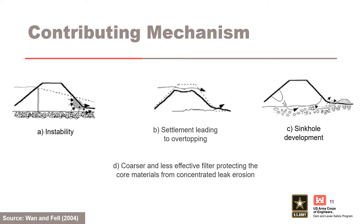Sloughing of the downstream slope can occur due to increased seepage flows in higher permeability shell after washout. Settlement or sinkholes may occur as the overlying adjacent finer materials are eroded into the remnant coarser matrix. A filter constructed of internally unstable soil will have potential for erosion of finer particles in the filter, rendering the filter coarser and less effective in protecting the core materials from concentrated leak erosion.